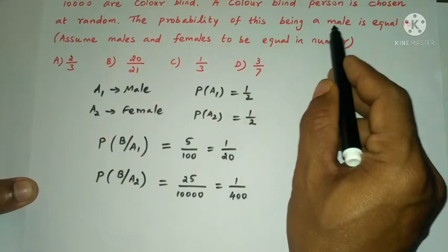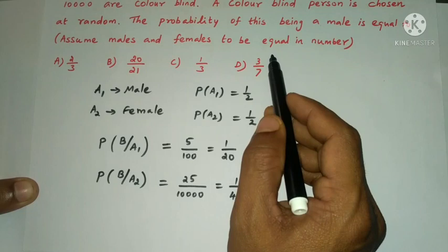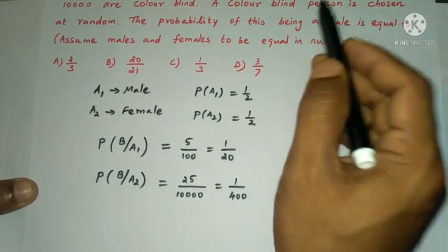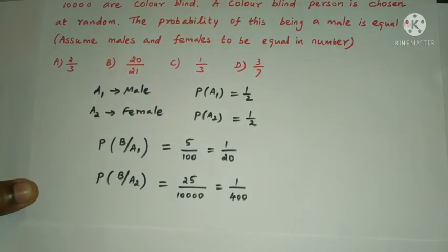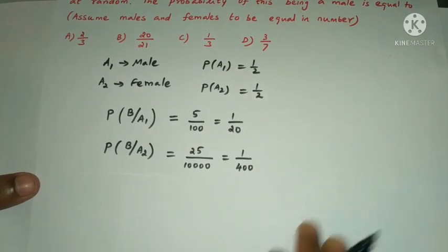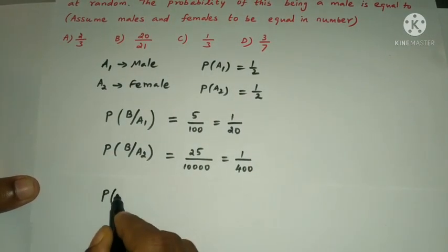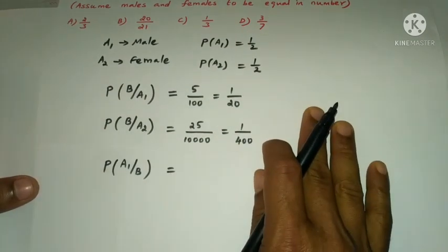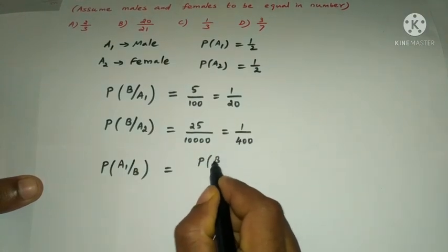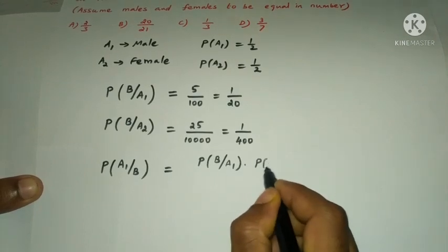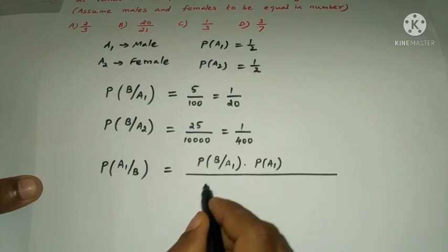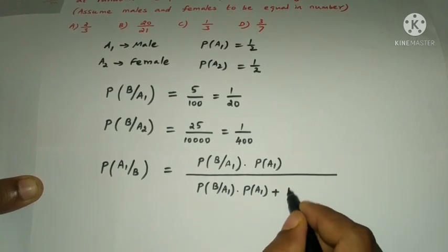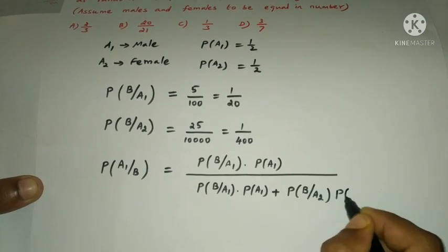The probability of the selected person being male, given colorblind, uses Bayes' theorem. The formula is P(A1|B) = P(B|A1) × P(A1), divided by P(B|A1) × P(A1) plus P(B|A2) × P(A2).